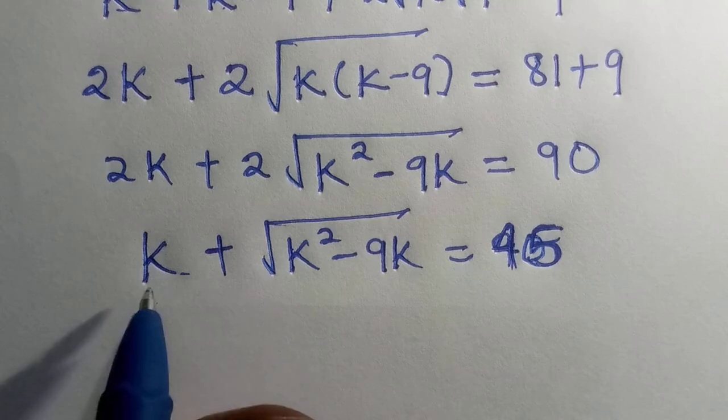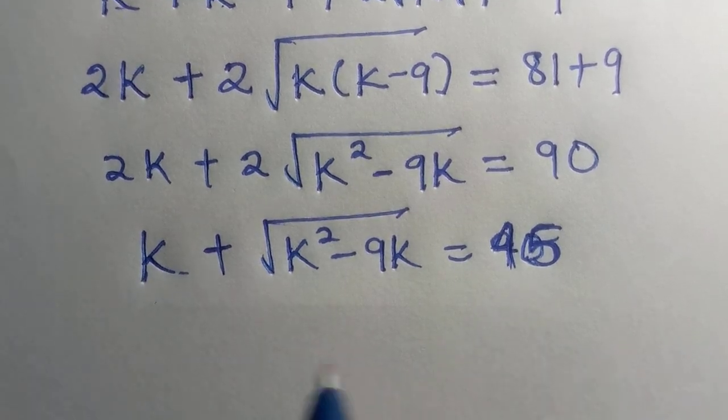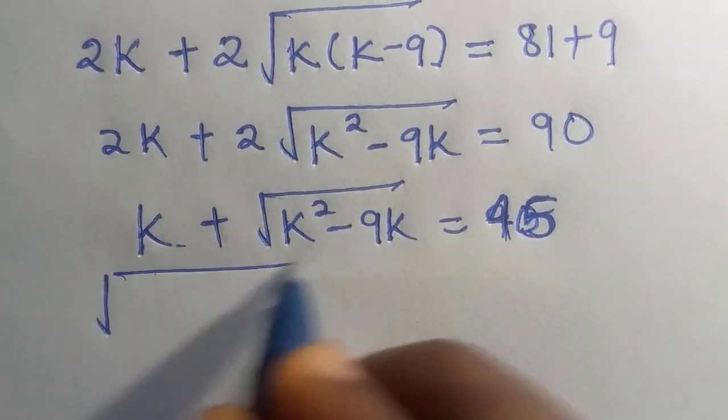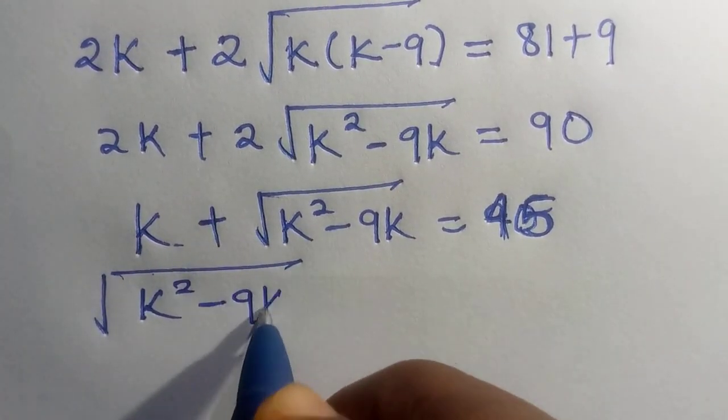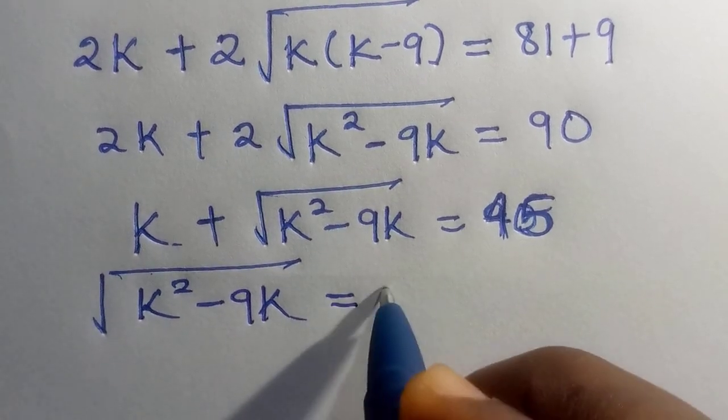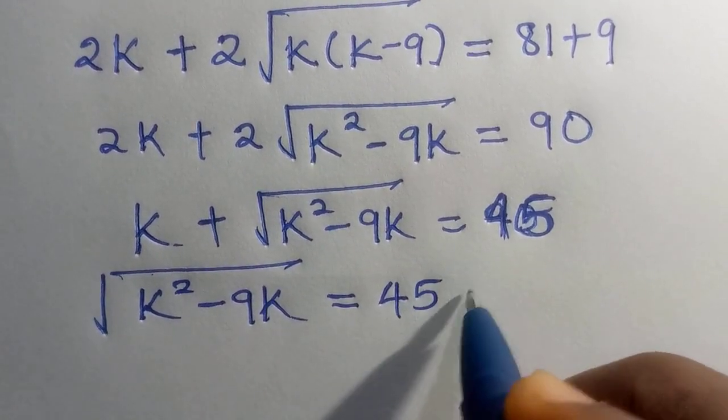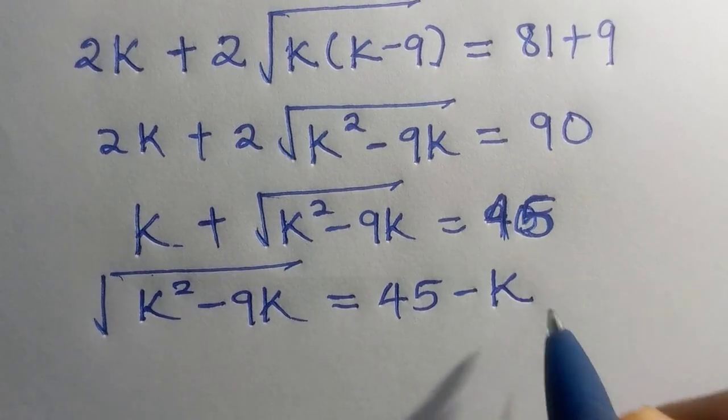And here we have, transferring k to other side, we are left with square root of k square minus 9k equals 45 minus k.